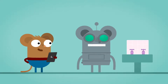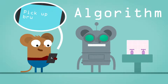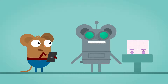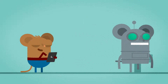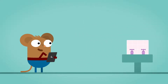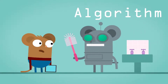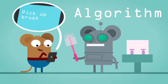If we want a computer to understand how to do something, we need to give it an algorithm. Algorithm sounds like a big word, doesn't it? But actually, an algorithm is something very simple but important.